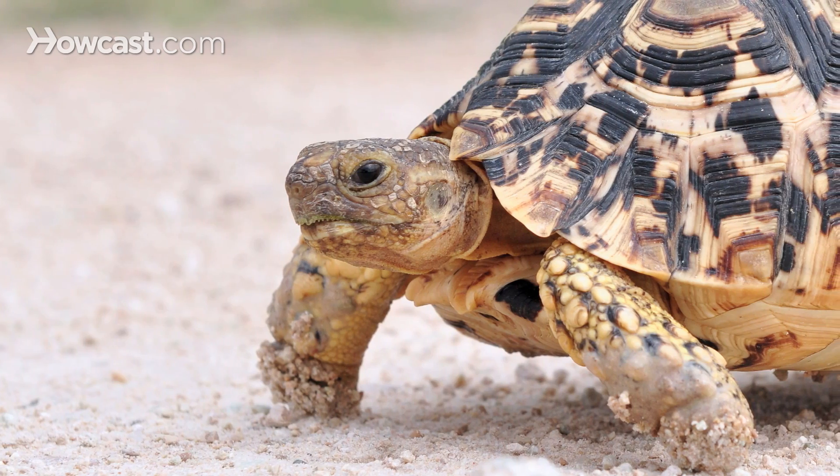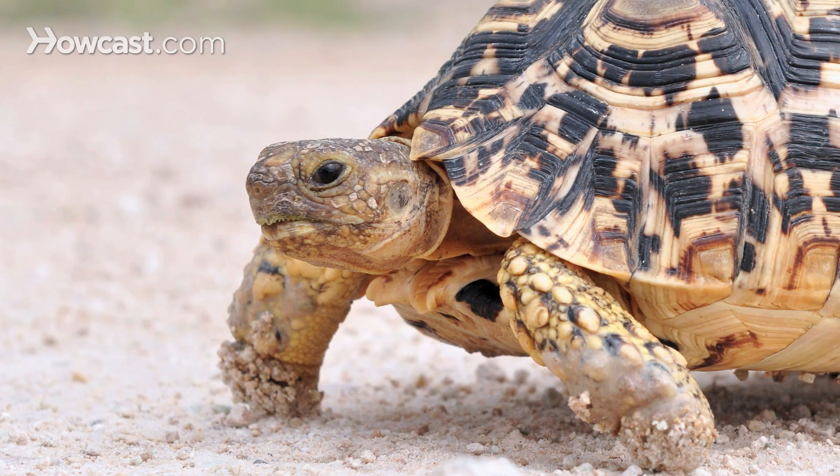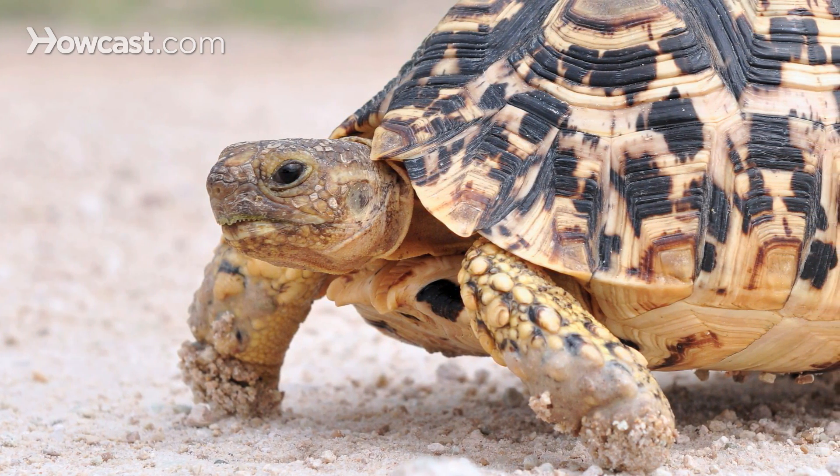The other thing that's very important in desert species would be the exposure to ultraviolet light. We call this UVB or ultraviolet B radiation. This is part of the sun's natural light. This is very important in these turtles and tortoises for the synthesis of vitamin D and for a normal calcium metabolism. Without UVB light they can develop many different types of metabolic issues.